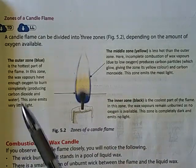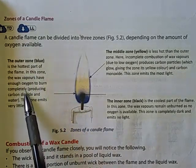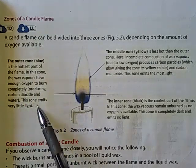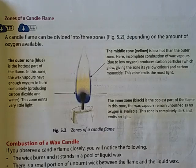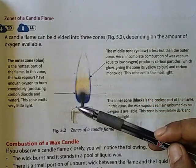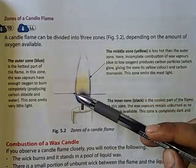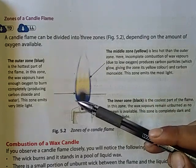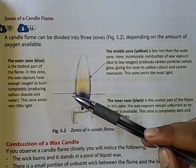The outer zone is the hottest part of a flame. In this zone, wax vapor has enough oxygen to burn completely, producing carbon dioxide gas and water. This zone emits very little light. It is thin and blue in color.